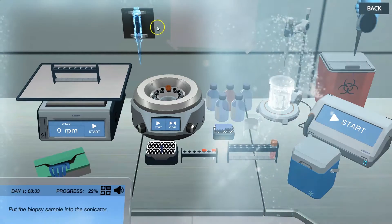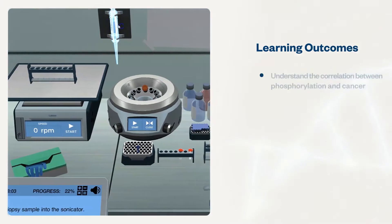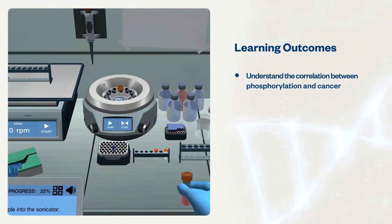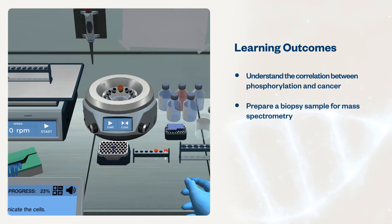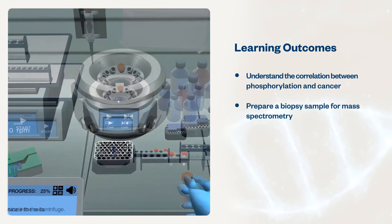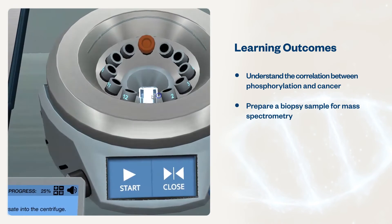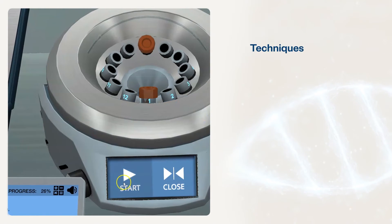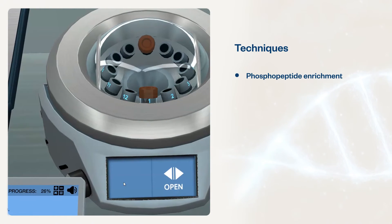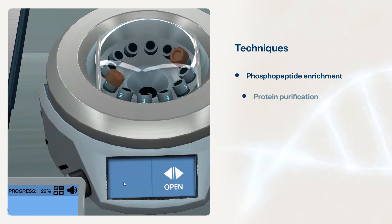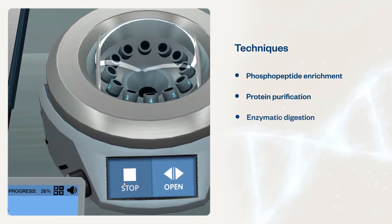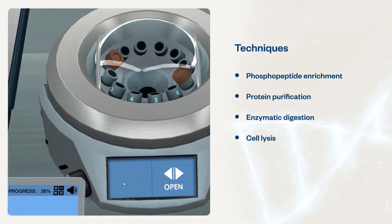These simulations will help students understand the correlation between phosphorylation and cancer, and prepare a biopsy sample for mass spectrometry. Students will use techniques such as phosphopeptide enrichment, protein purification, enzymatic digestion, and cell lysis.